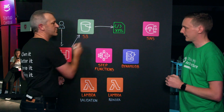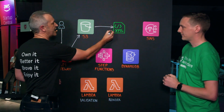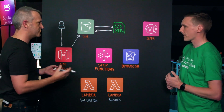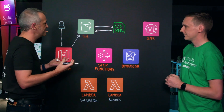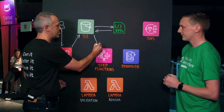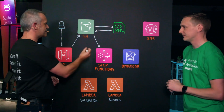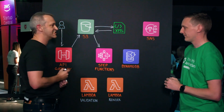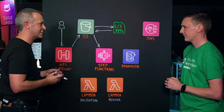That GeoTIFF file will get sent over to that third-party provider. They'll then send back what's called a LandXML file — a LandXML file is a representation of that TIFF in a particular format that has some geospatial information. From there, we need to kick off the validation process. That step function is kicked off by an event — when that file lands in the S3 bucket with the right folder structure, the step function gets kicked off.